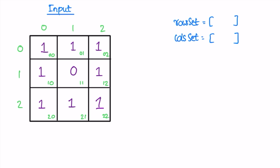Let's take a look at Example 1. I've drawn the matrix here with indices. This is the zeroth row and zeroth column; adjacent to that are columns one and two, followed by the first and second rows. Each element is denoted by the intersection of its row and column, with its index written at the bottom right. We need to iterate through the matrix from left to right, starting from row zero and column zero.